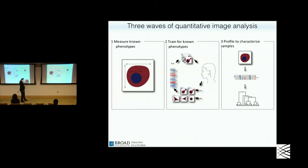We've done a couple of assays successfully with tissues. They're more challenging because you don't have cells in a nice monolayer — you've got oblique sections of various cells. Depending on what you want to measure, it can be quite challenging because you're not measuring full cells unless you're doing it in 3D, which adds another layer of complication. But there are a great many things that can be measured in tissues, and we already have some successful case studies.